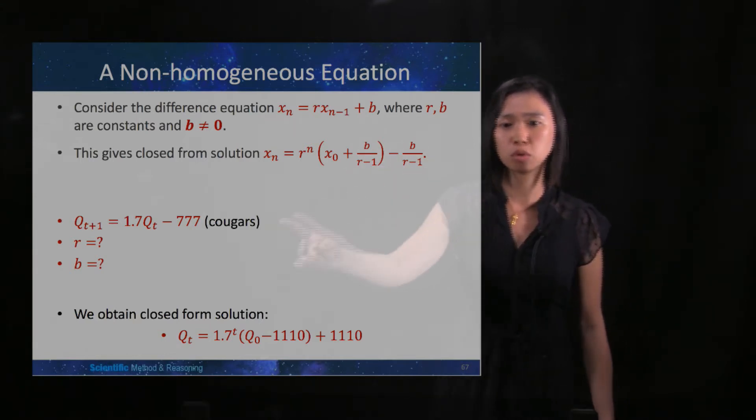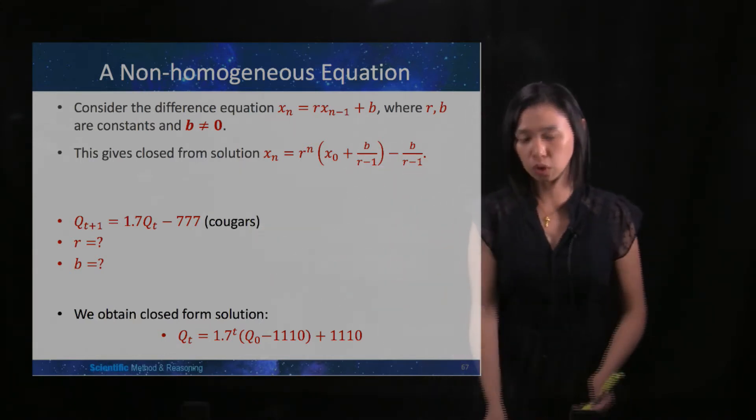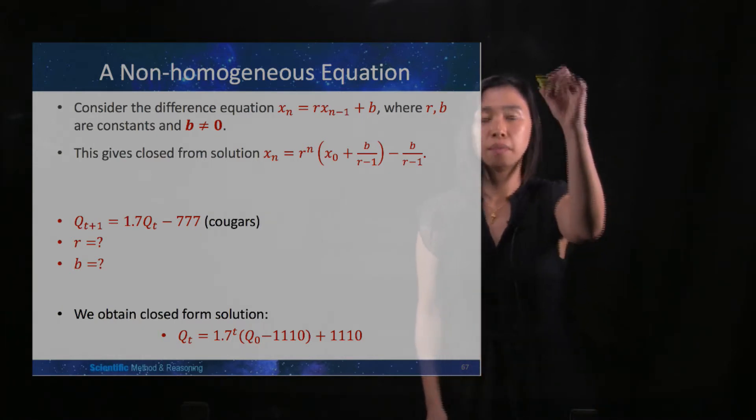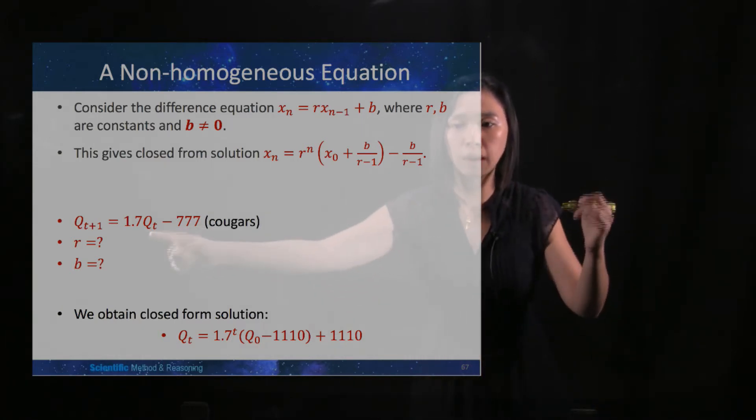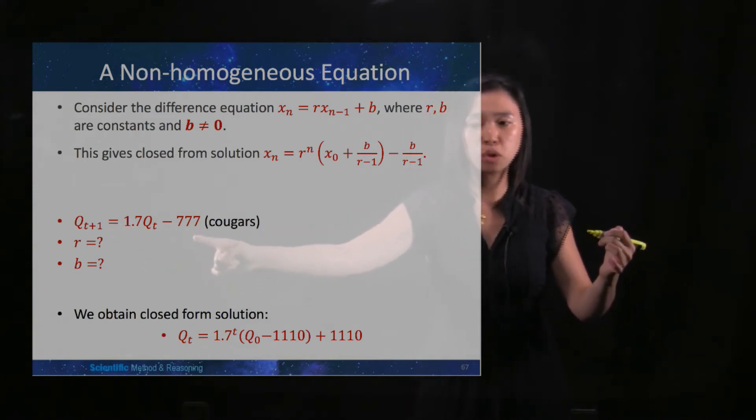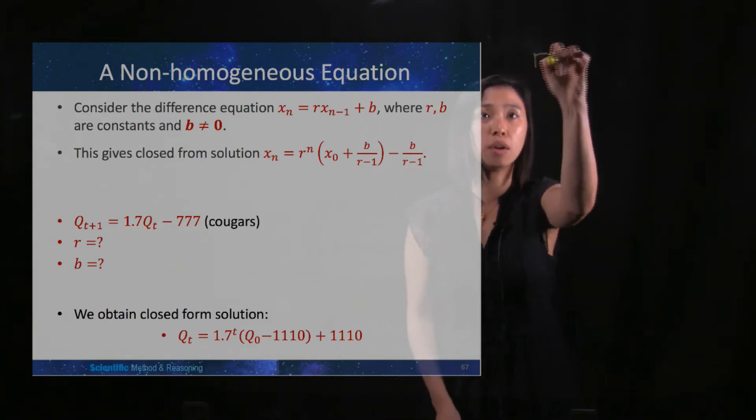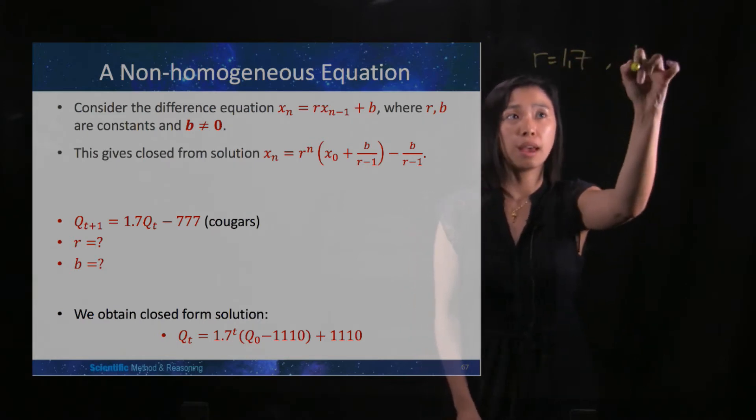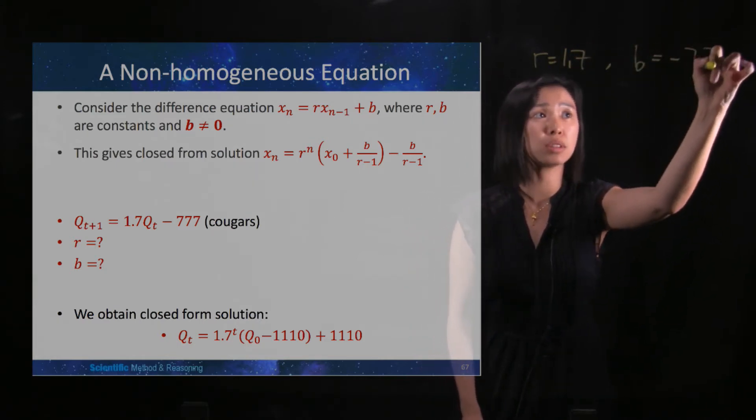So we will apply the results to our example on Cougars. In the example of Cougars, you will have your first-order linear non-homogeneous difference equation with r is 1.7 and b is negative 777.